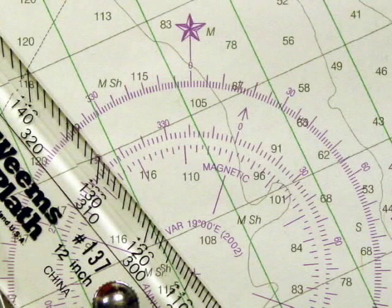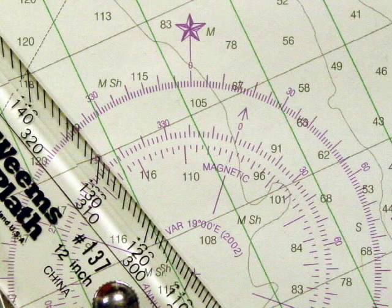In this example, the course heading is 320 degrees true as read from the outer circle or 301 degrees magnetic as read from the inner circle.